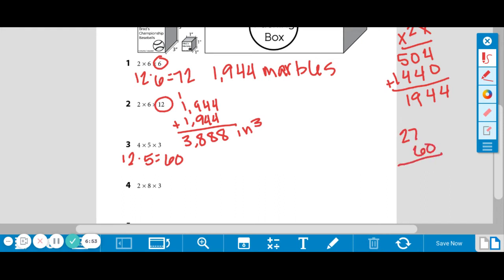So 27 times 60. Okay, I don't need to worry about that zero. I'm just going to bring it down, because anything times zero is itself. So 6 times 7 is 42. 6 times 2 is 12. 16. So our answer for number three is 1,620 inches cubed, which is the same thing as 1,620 marble boxes, because they are one inch.